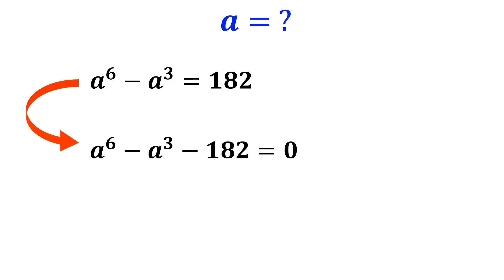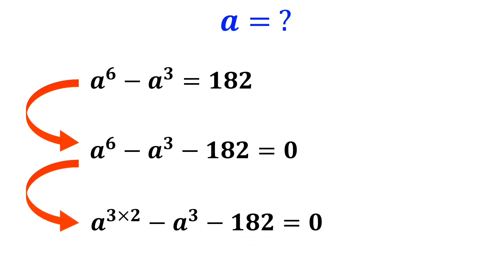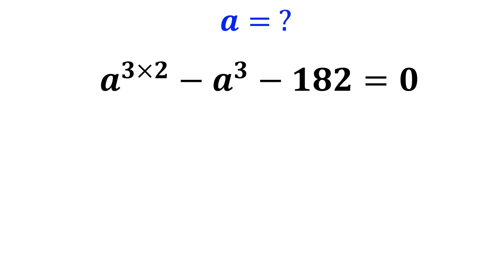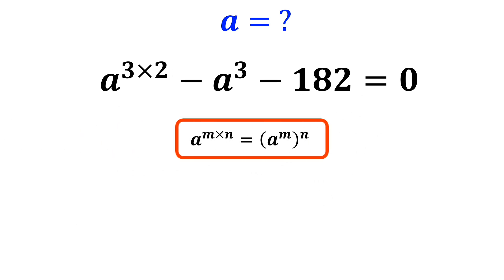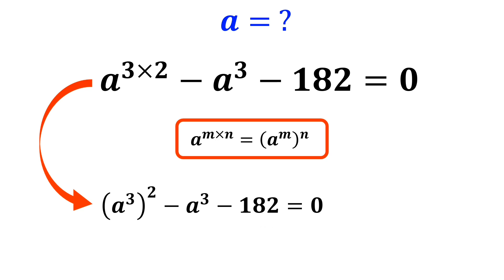Now, we write a to the power of 6 as a power of 3, so it becomes a to the power of 3 times 2, minus a to the power of 3, minus 182, is equal to 0. According to the rules of exponents, a to the power of m times n is equal to a to the power of m, to the power of n. So we can rewrite this equation as a to the power of 3, to the power of 2, minus a to the power of 3, minus 182, is equal to 0.